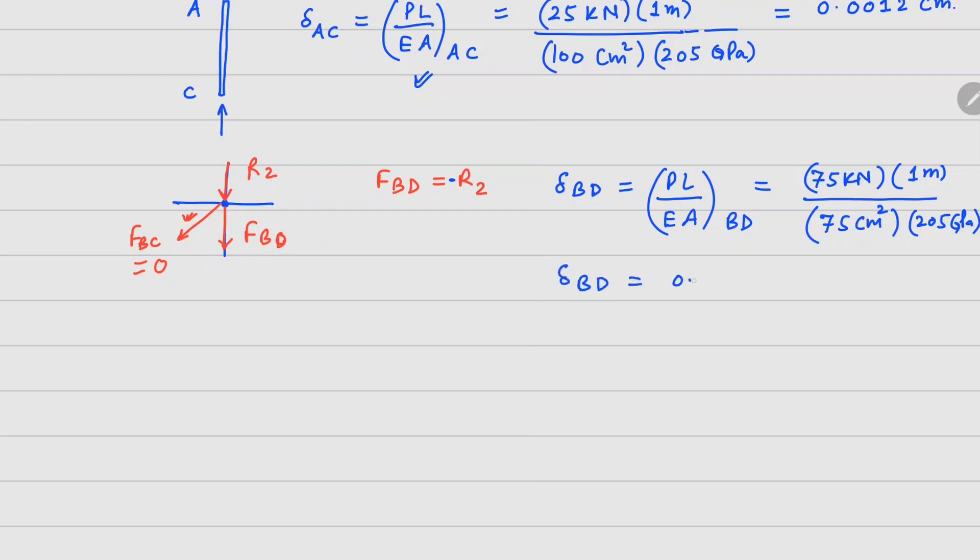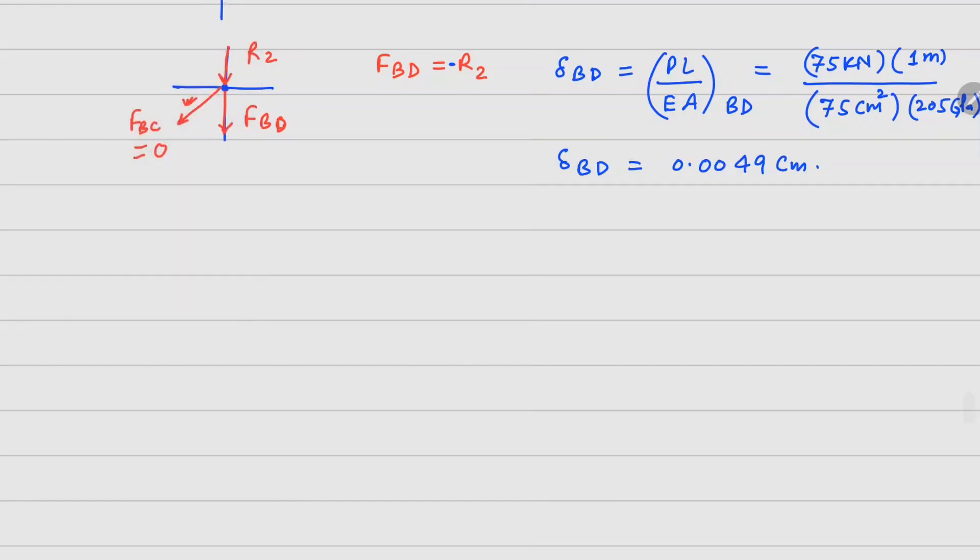Now the problem is asking the angle AB is going to make from horizontal. So originally your AB is like this, and after deformation this point moves down by 0.0012 centimeters.